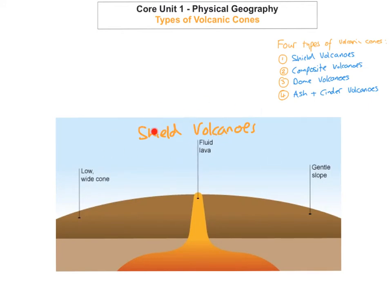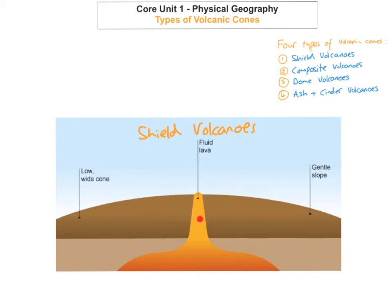The first one is a shield volcano and shield volcanoes look like the picture down below. There are a few different features you need to know about this type of volcano. The first thing is that the lava is very basic and runny — it's not very thick because it's low in silica content. So that's really important: shield volcanoes have low silica content, so the lava is very basic and runny.